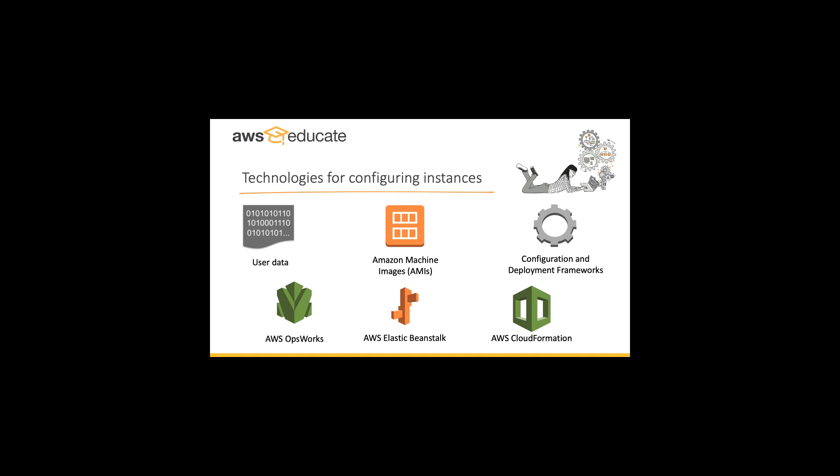You have choices for configuration management. You can use OpsWorks, a configuration management service that provides managed instances of Chef and Puppet — automated platforms that allow you to use code to automate and configure your servers. OpsWorks lets you use Chef and Puppet to automate how servers are configured, deployed, and managed across your EC2 instances or on-premise compute environments. OpsWorks has three offerings: AWS OpsWorks for Chef Automate, AWS OpsWorks for Puppet Enterprise, and AWS OpsWorks for Stacks.